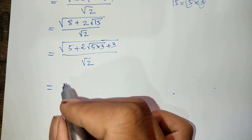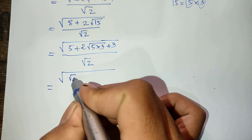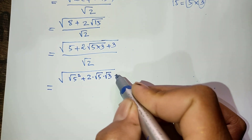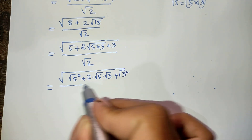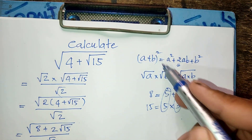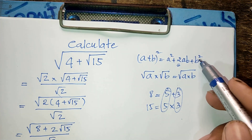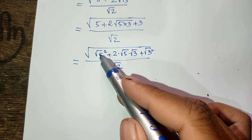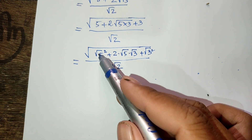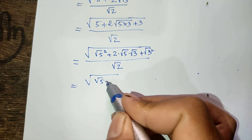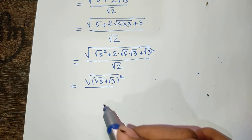Dividing by square root of 2, I can rewrite this as (square root of 5)² + 2·square root of 5·square root of 3 + (square root of 3)², all divided by square root of 2. Verifying the rule (a + b)² = a² + 2ab + b², we see that a = square root of 5 and b = square root of 3. So this expression equals (square root of 5 + square root of 3)², divided by square root of 2.